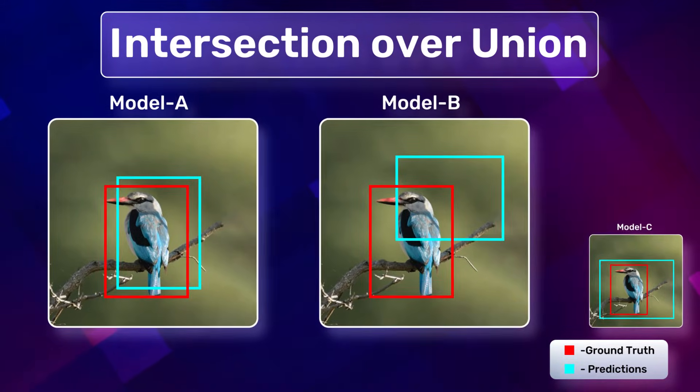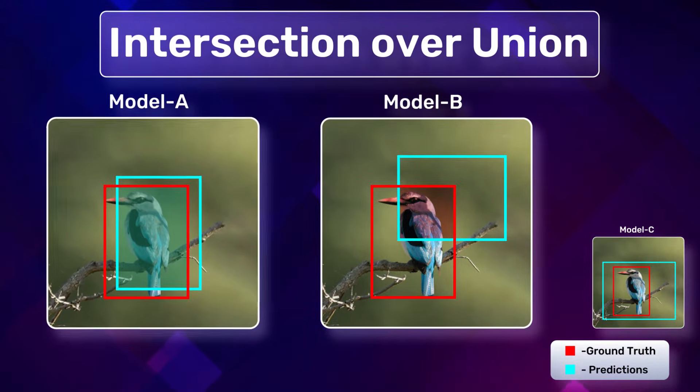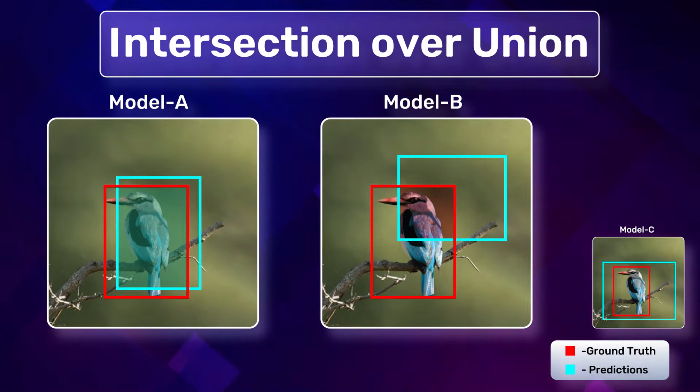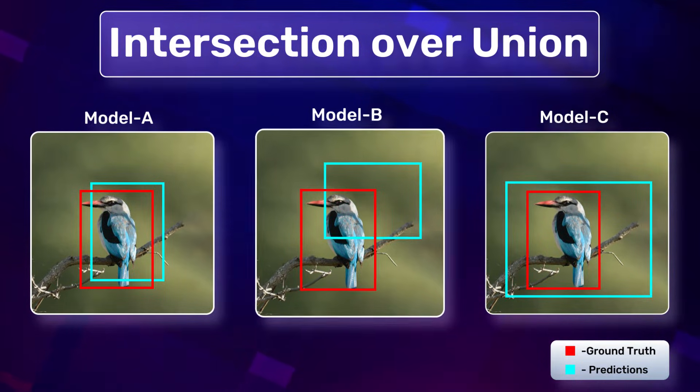Model A has a relatively higher overlap with the ground truth compared to Model B. We might conclude that Model A is performing better, right? But hold on, there's more to the story. Model C comes into the picture.